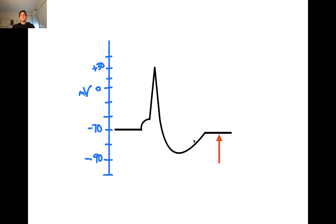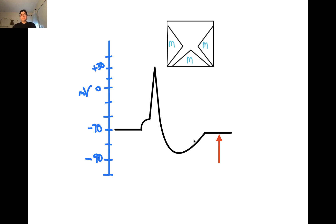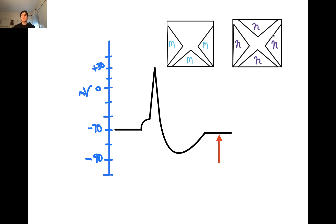Then we return to the resting potential. At the resting potential, the voltage-gated sodium channels are closed but not inactivated, and the voltage-gated potassium channels are closed. That concludes the action potential.